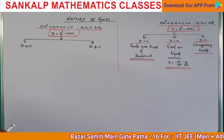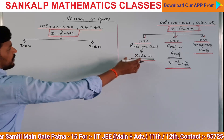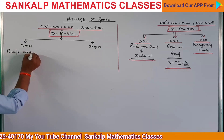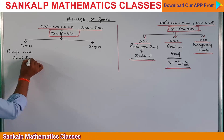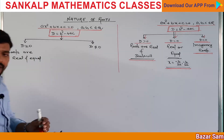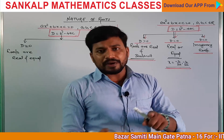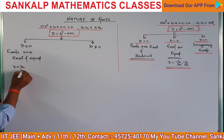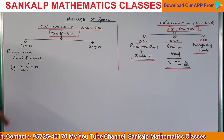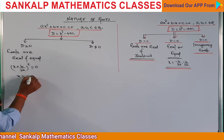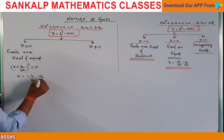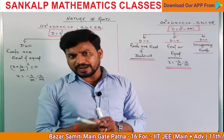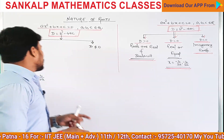D = 0 होगा तो roots are real and equal। यहाँ पर perfect square — equation convert होके x + b/2a की whole square = 0 बनेगा। तो roots यहाँ से x = -b/2a आएगा — real भी है और equal भी हो गया।